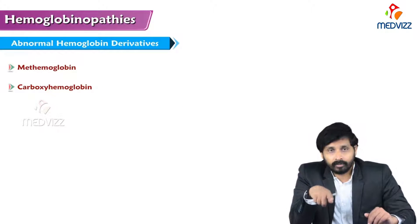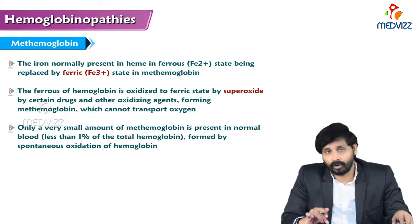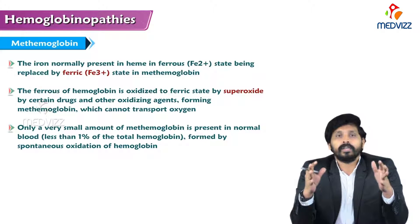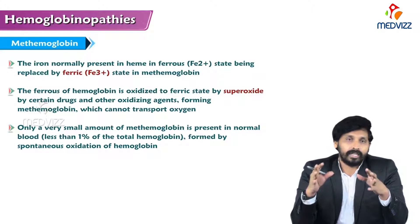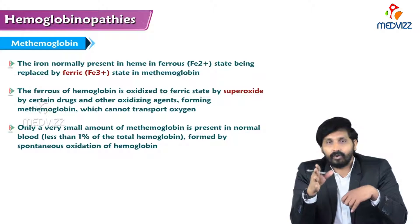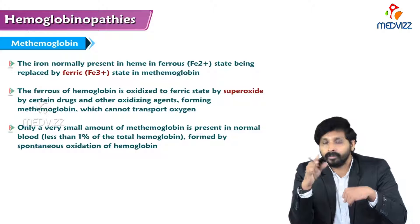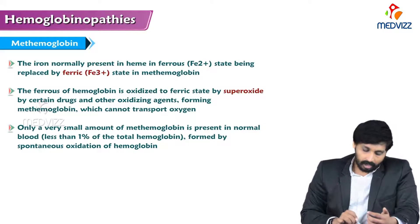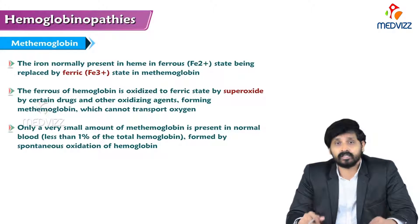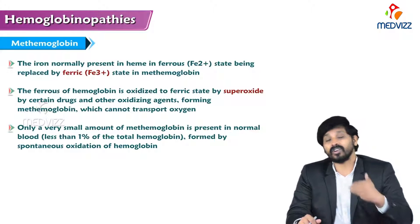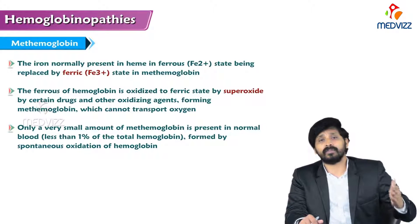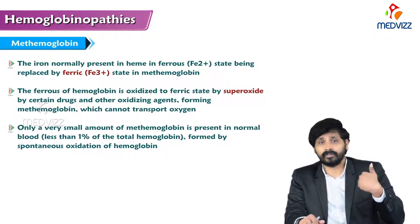Abnormal hemoglobin derivatives are of two types: methemoglobin and carboxyhemoglobin. In normal hemoglobin, iron at the center of the porphyrin rings is in the ferrous (Fe²⁺) form, but in methemoglobin the iron is oxidized to the ferric (Fe³⁺) form. This oxidation is caused by free radicals such as superoxide ions, certain drugs, or other oxidizing agents.